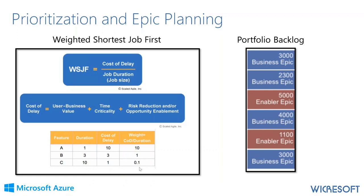WSJF is not the only scoring metric we can use — alignment is another important one. It could be that alignment or regulatory compliance overrides scoring by WSJF. Once this takes place, we're in the portfolio backlog and we use our points, WSJF, and any other criteria to do prioritization. In the end, these are the primary tools, but not the only ones you could be using within your organization.